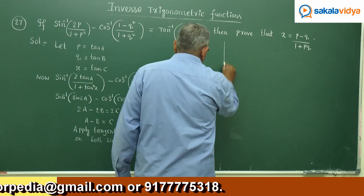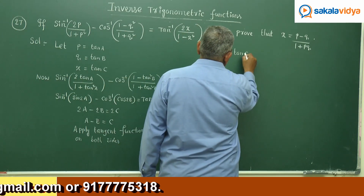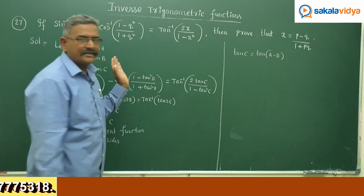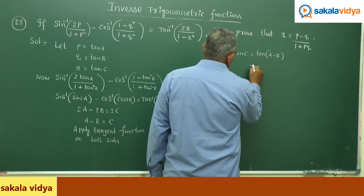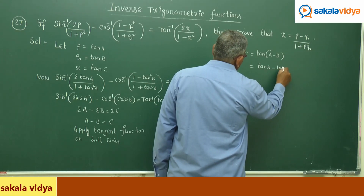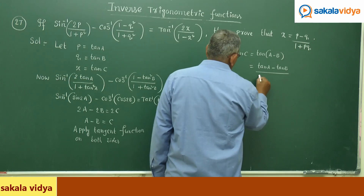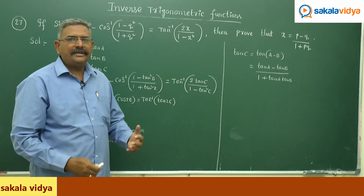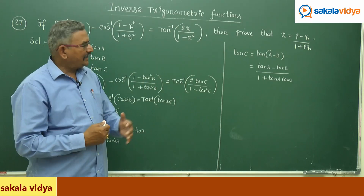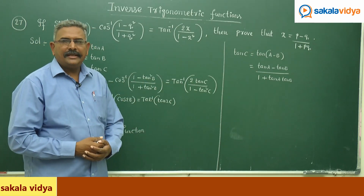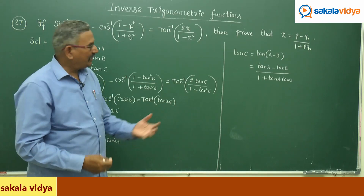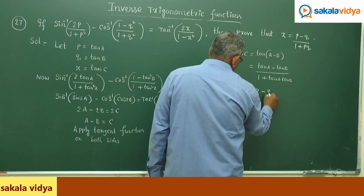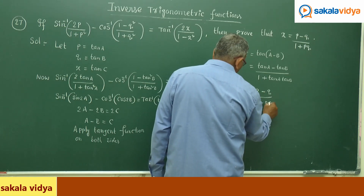Applying the tangent function on both sides, we get tan c = tan(a - b). Since tan c is x, and using the formula for tan(a - b), x equals (tan a - tan b)/(1 + tan a · tan b). Substituting back tan a = p and tan b = q, therefore x equals (p - q)/(1 + pq). Hence proved.